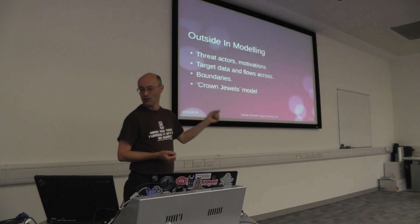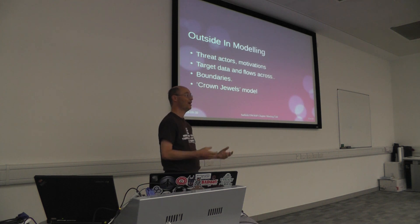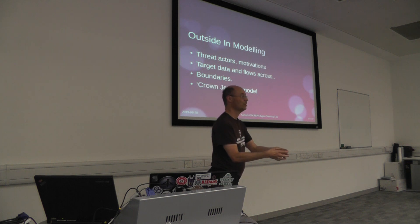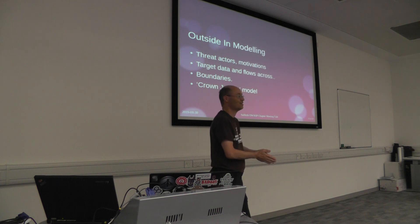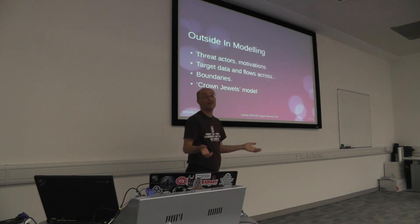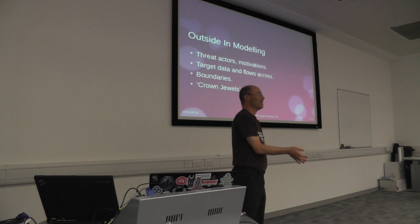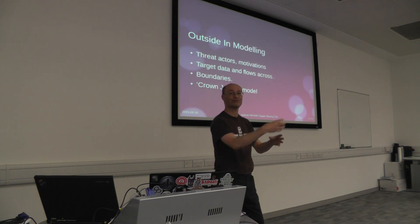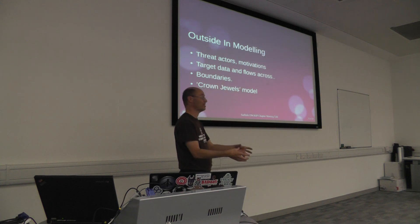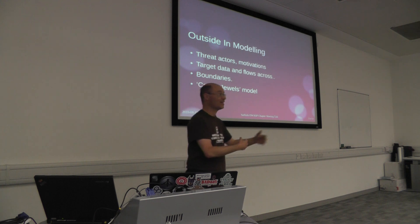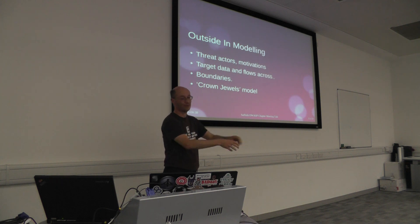Data flows help you identify boundaries — typically network boundaries, where information flows from an area where you have control to an area where you don't. The obvious example is an internet-connected system. But there may be other boundaries inside where different departments or teams operate those networks or systems. When you understand what classification of information goes across those boundaries, you understand where your threats come from — who can intercept it and who has control over those bases.